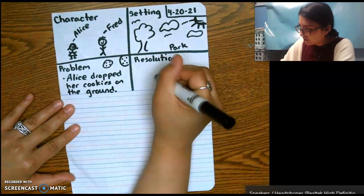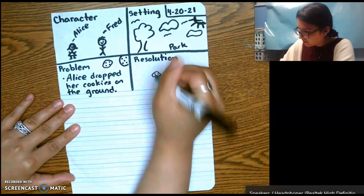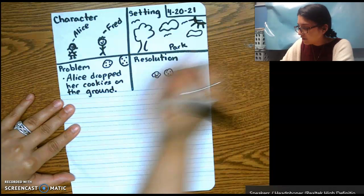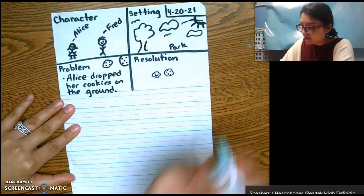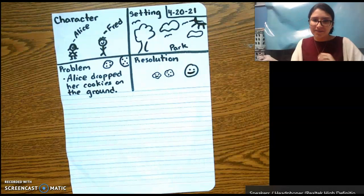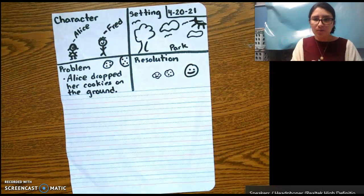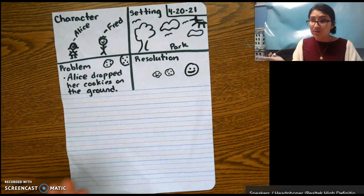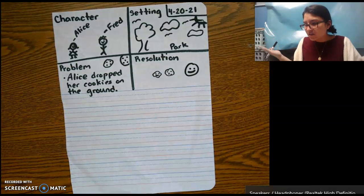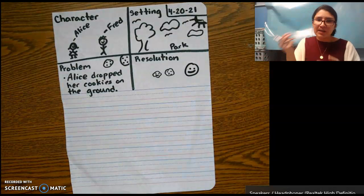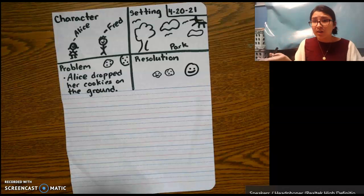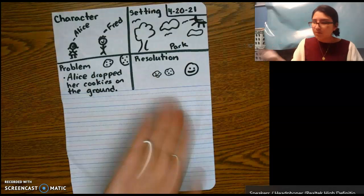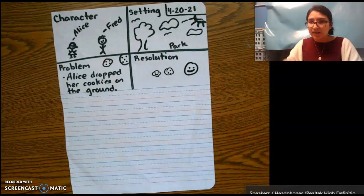So this resolution, trying to draw cookies. Fred gives Alice some of his cookies and then Alice is happy again. Okay, so my characters Alice and Fred, those are people, they're going to act like people. Park, that's a real setting that would be found in today's world. Problem: Alice dropped her cookies on the ground. That's a problem that someone could actually have. You could be eating and then oops, the cookies fall on the ground, now they're dirty, you can't eat them anymore. The resolution, how the problem is fixed. Well, my solution to my story is Fred shares some of his cookies with his friend Alice. And then boom, she's smiling again, she's happy.